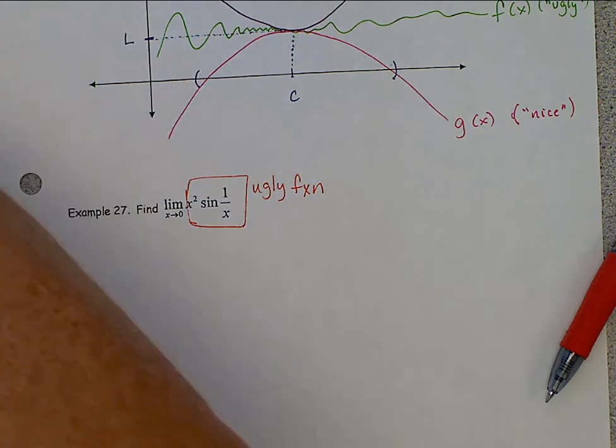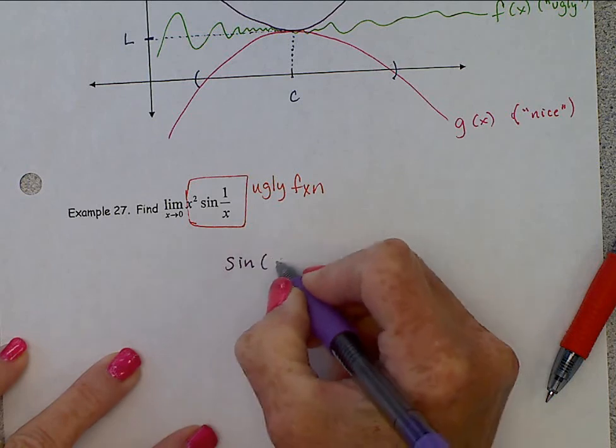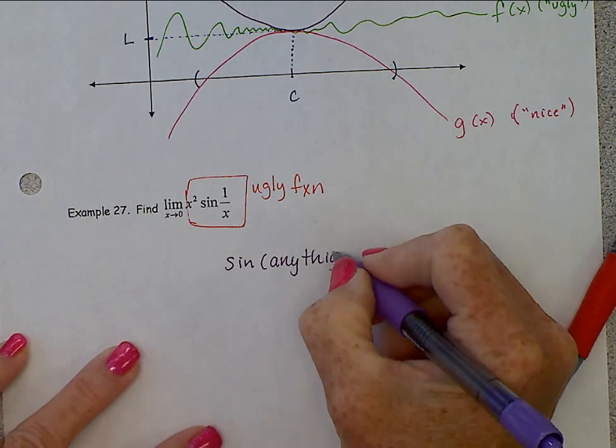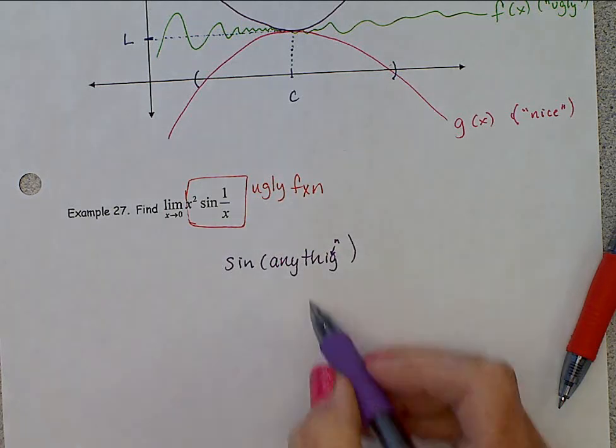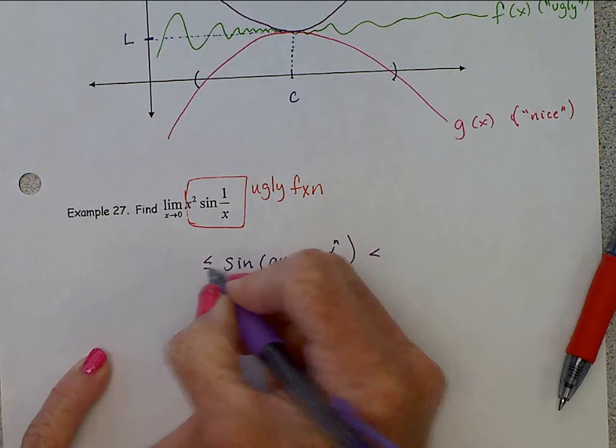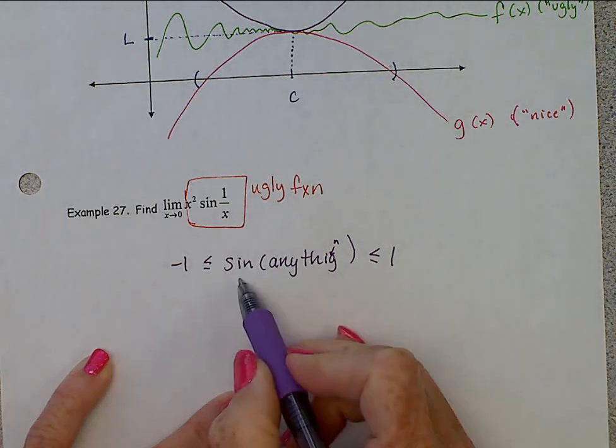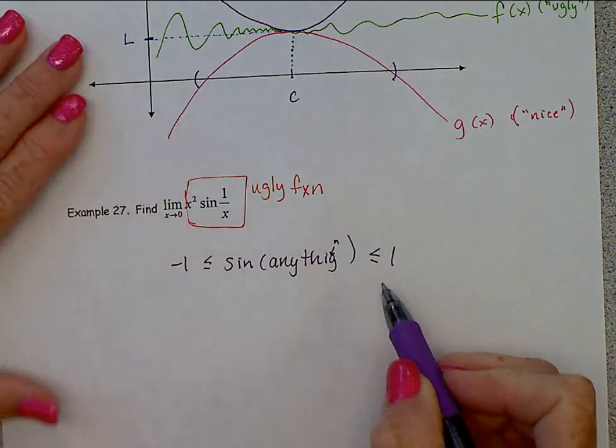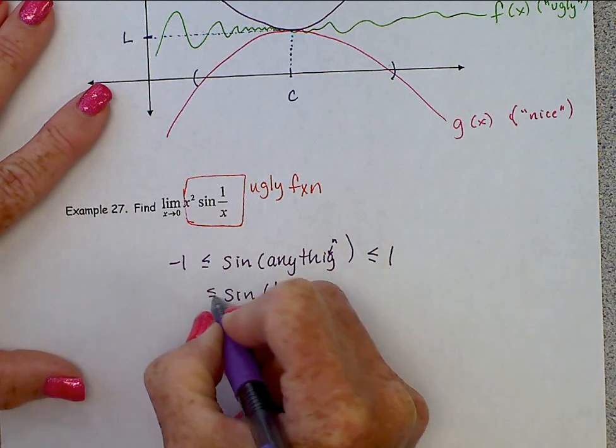Alright, now to start this, we could say that the sine of anything, and if you think back to the unit circle, the sine of anything has to be between negative one and one. Think back to the unit circle. The sine or y coordinate of any point on the unit circle is between negative one and one. Which means then, we know the sine of one over x must be between negative one and one.